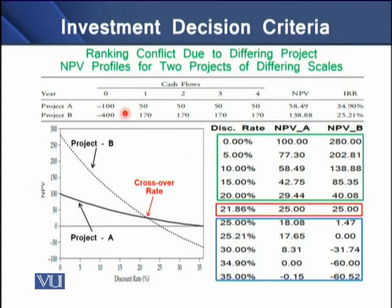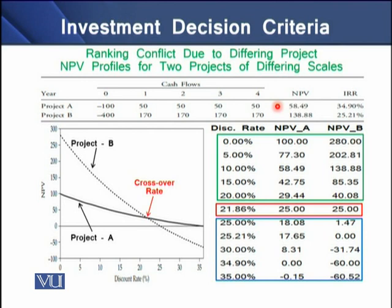Now considering cash flows of two projects with different scales: Project A has an initial outflow of $100 and Project B has an initial outflow of $400, so Project A is smaller than Project B. These projects have future cash inflows. Project A has an NPV of $58.49 whereas Project B has an NPV of $138.88.